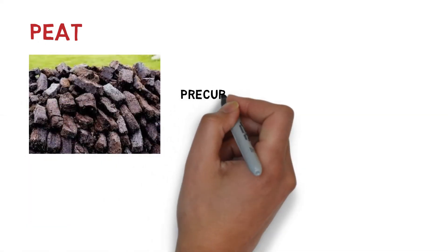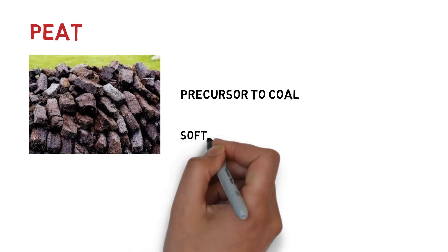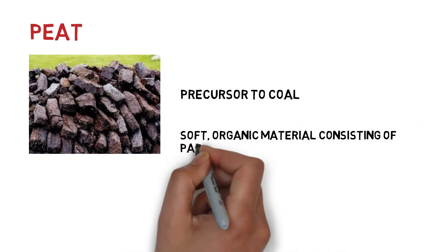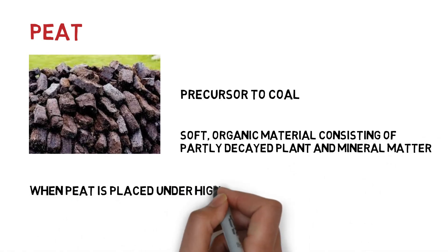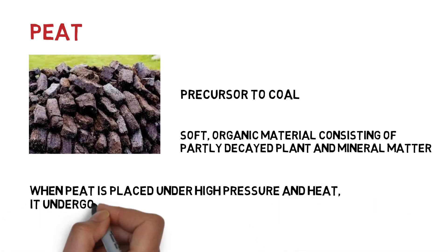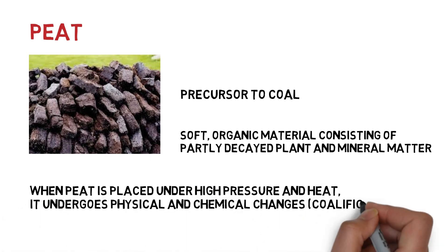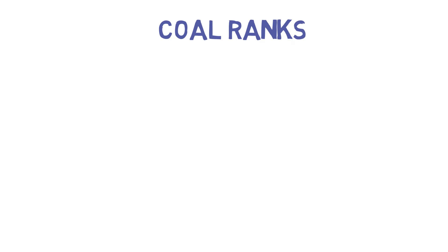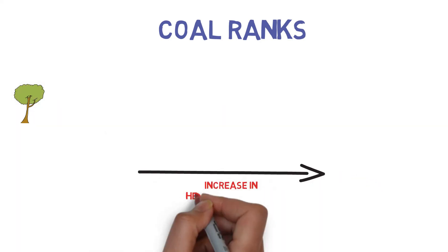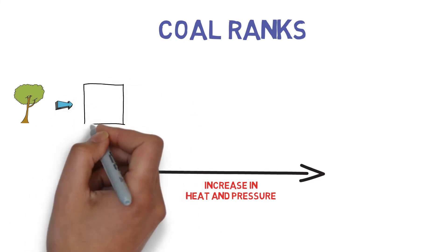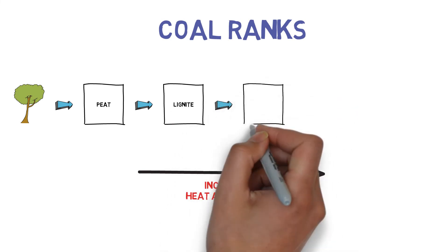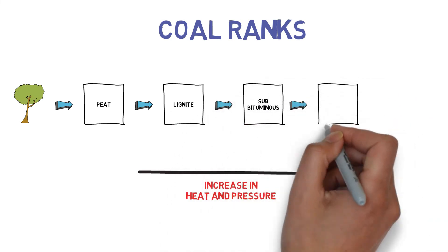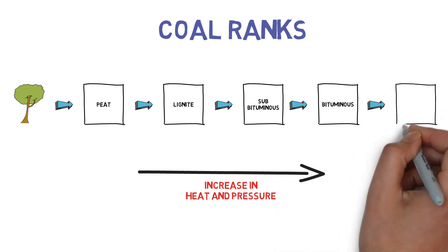The precursor to coal is peat. Peat is a soft organic material consisting of partly decayed plant and mineral matter. When peat is placed under high pressure and heat, it undergoes physical and chemical changes to become coal. The rank of coal increases according to the increase in heat and pressure under which it was formed. The highest quality coal is anthracite.